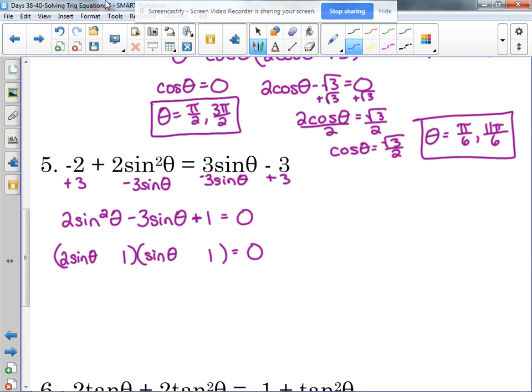It's a positive one, so it has the same sign. The three is negative, so they are both negatives. You can check it real quick. The outside gives us negative two sine, the inside gives us negative one sine. That's negative three sine together. And then negative one times negative one is positive one.